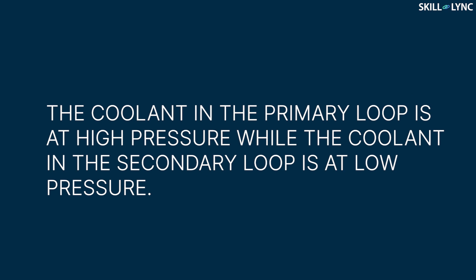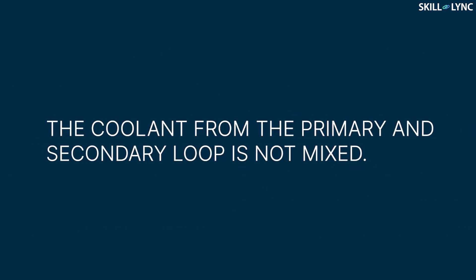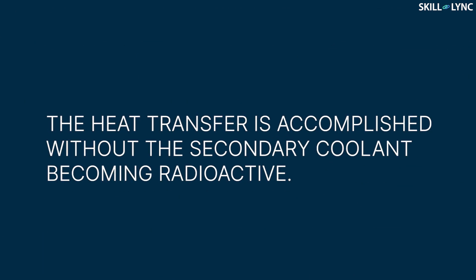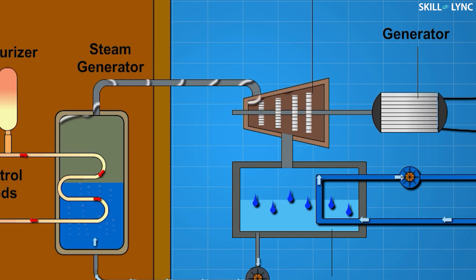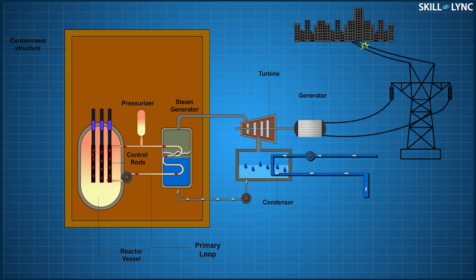The difference between the coolant in both loops is that the coolant in the primary loop is at high pressure, while the coolant in the secondary loop is at relatively low pressure. This allows the water to boil and convert to steam. The coolant in the secondary loop thus gets the heat without mixing the two fluids. The separation of the two fluids ensures that the coolant in the secondary loop does not get radioactive. Finally, the steam is generated in the secondary loop.